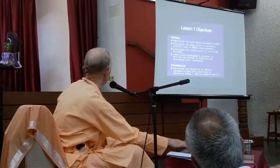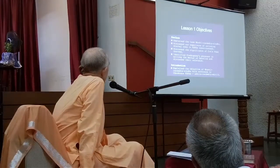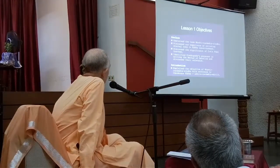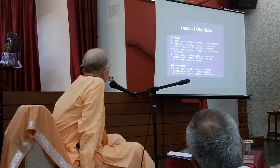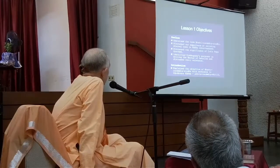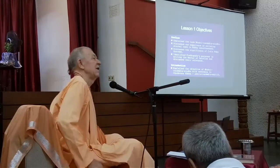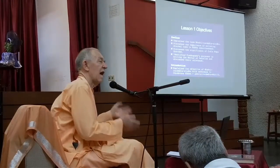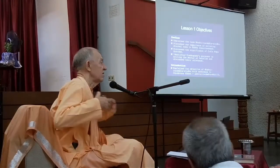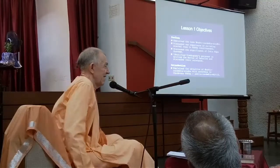In the introduction, he begins to explain the objective of Bhakti Rasamrita Sindhu with reference to Vrindavan Krishna. It is in Vrindavan that Krishna's rasa is fully manifest.